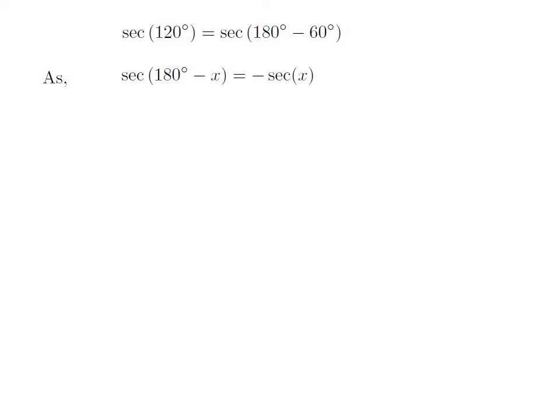As we know, the trigonometry identity secant of 180 degrees minus x is equal to minus secant of x.